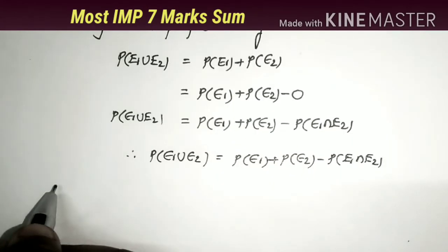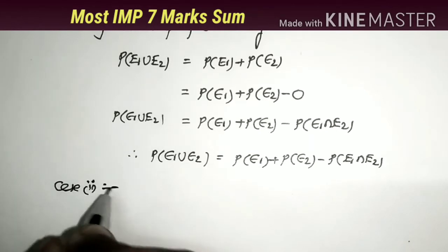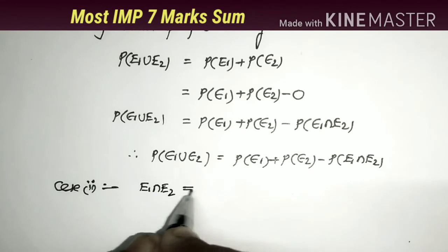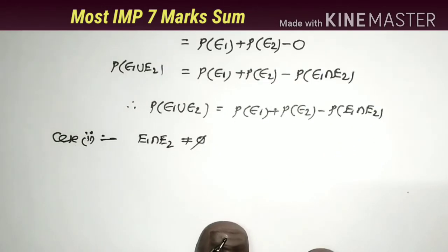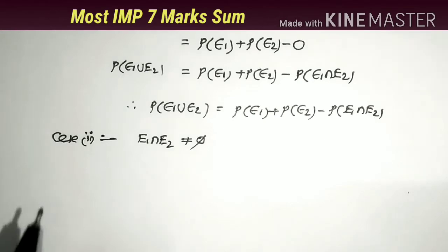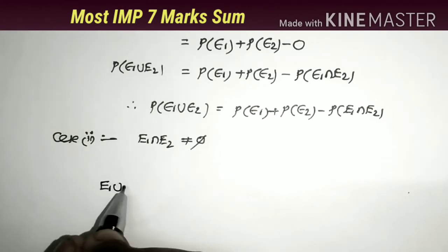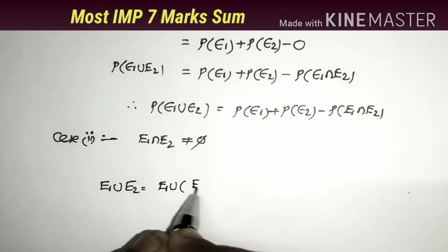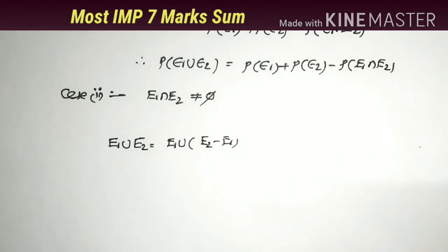Now coming to Case 2: E1 ∩ E2 ≠ null set. Before starting Case 2, I show two important formulas. Formula 1: E1 ∪ E2 = E1 ∪ (E2 - E1). Let us verify this using Venn diagrams.